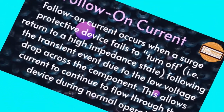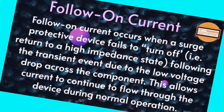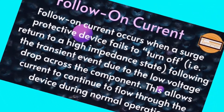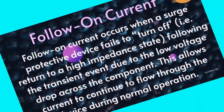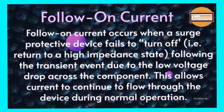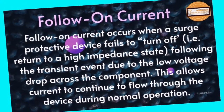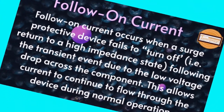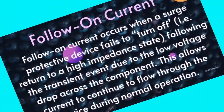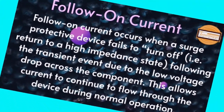Follow-on current occurs when a surge protective device fails to turn off, i.e. return to a high impedance state, following the transient event due to the low voltage drop across the component. This allows current to continue to flow through the device during normal operation.